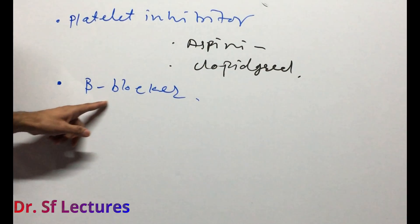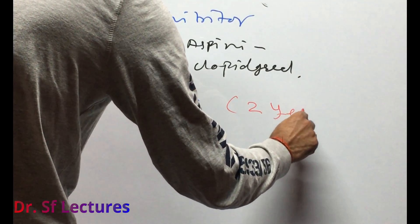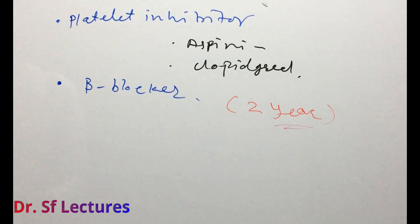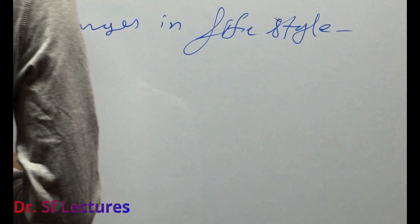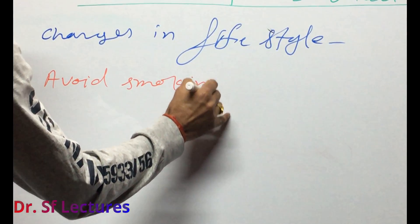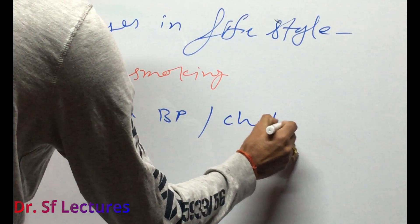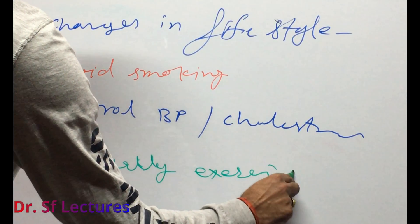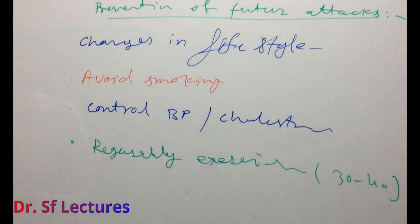We can use beta blockers for the long term — beta blockers will reduce the area of infarction, and we should continue for at least two years. For non-pharmacological prevention, we make changes in lifestyle, like avoiding smoking, controlling blood pressure and cholesterol, and exercising regularly for at least 30 to 40 minutes.